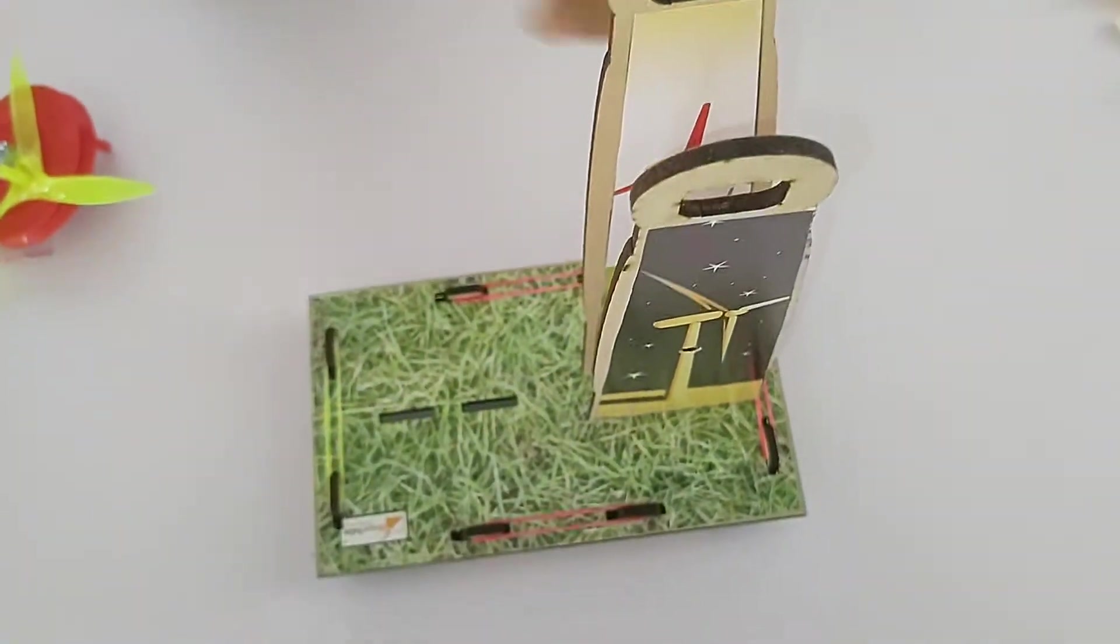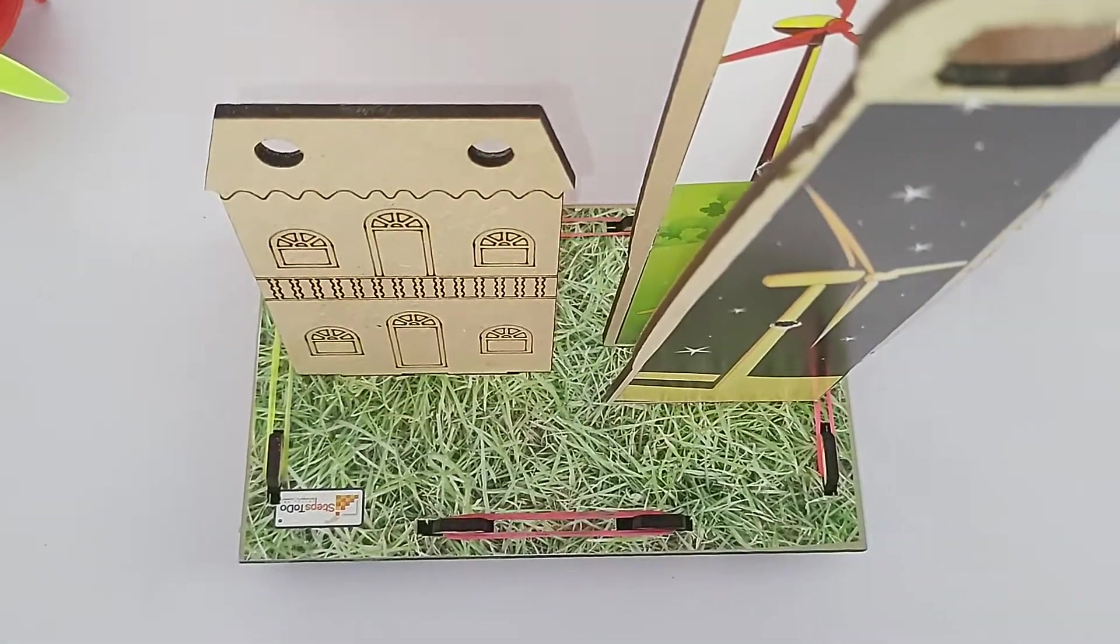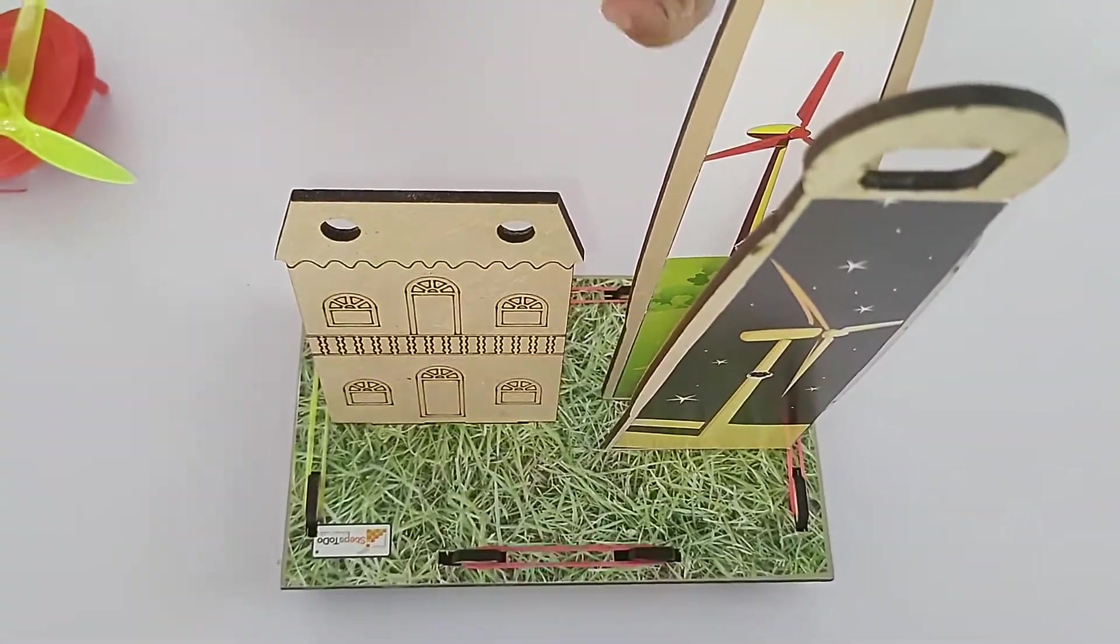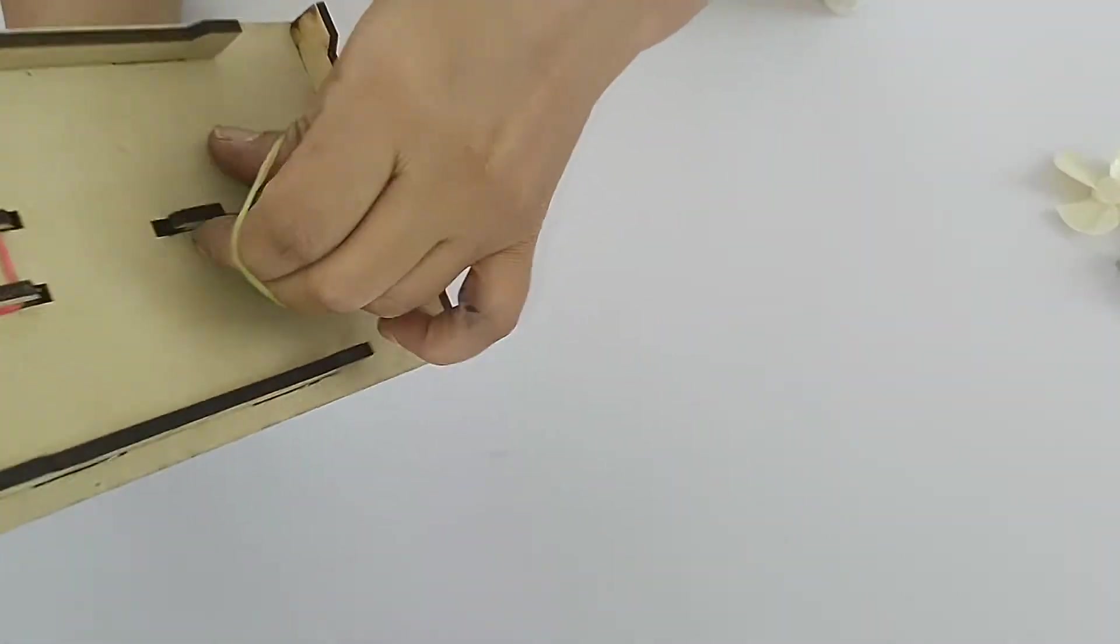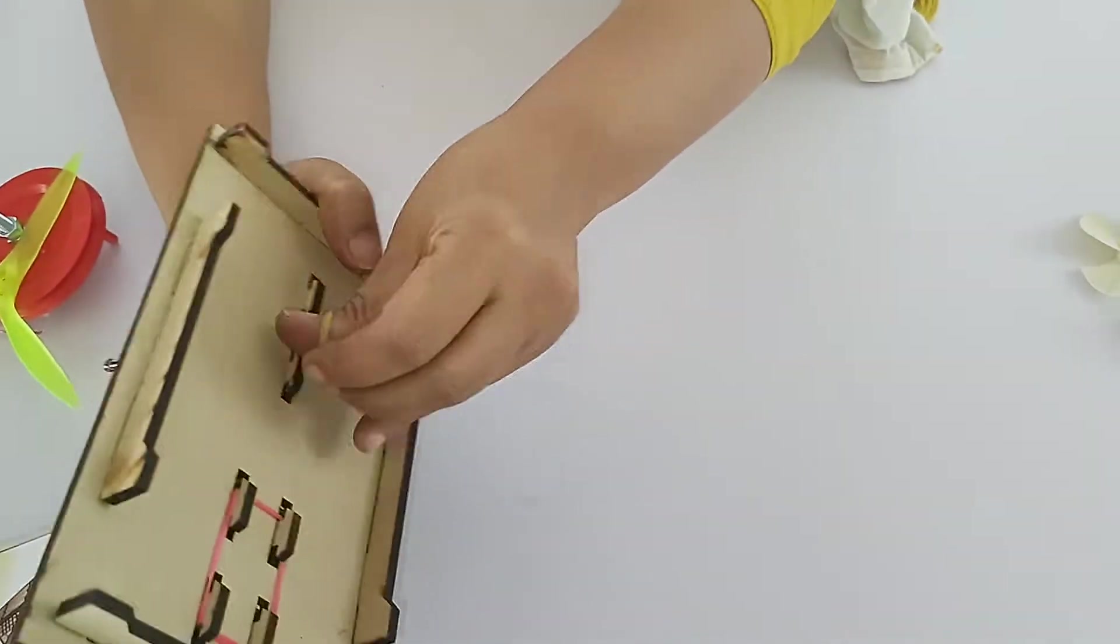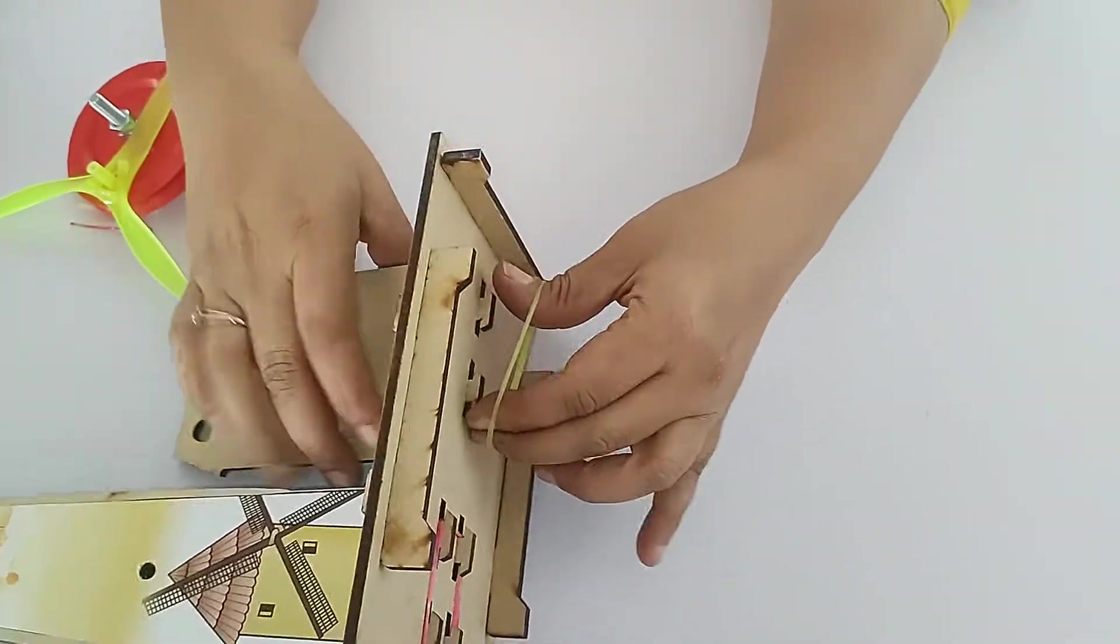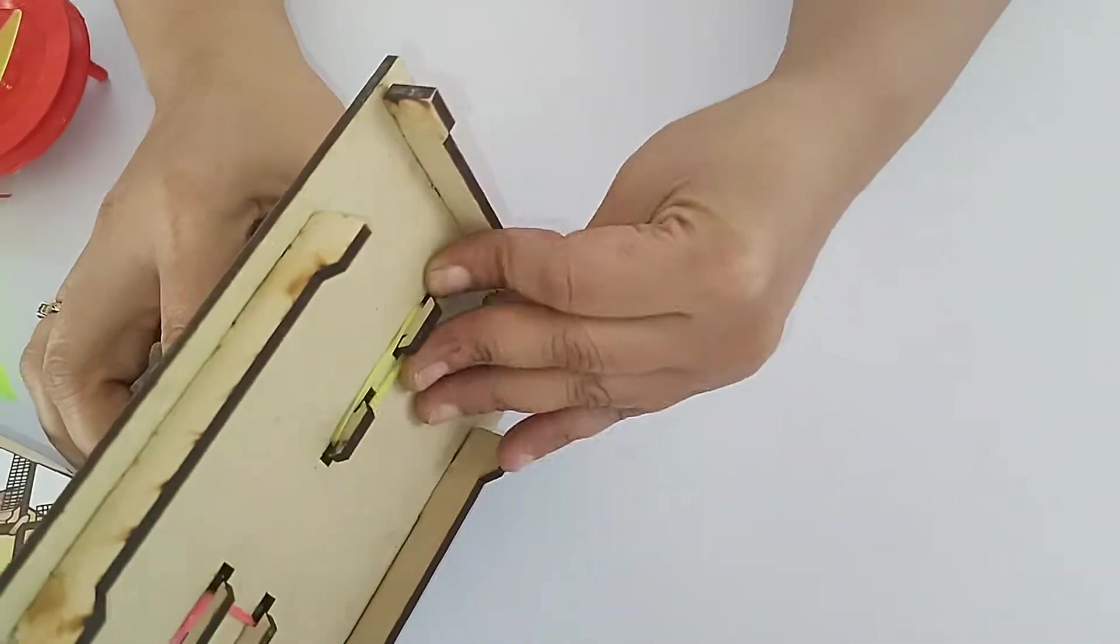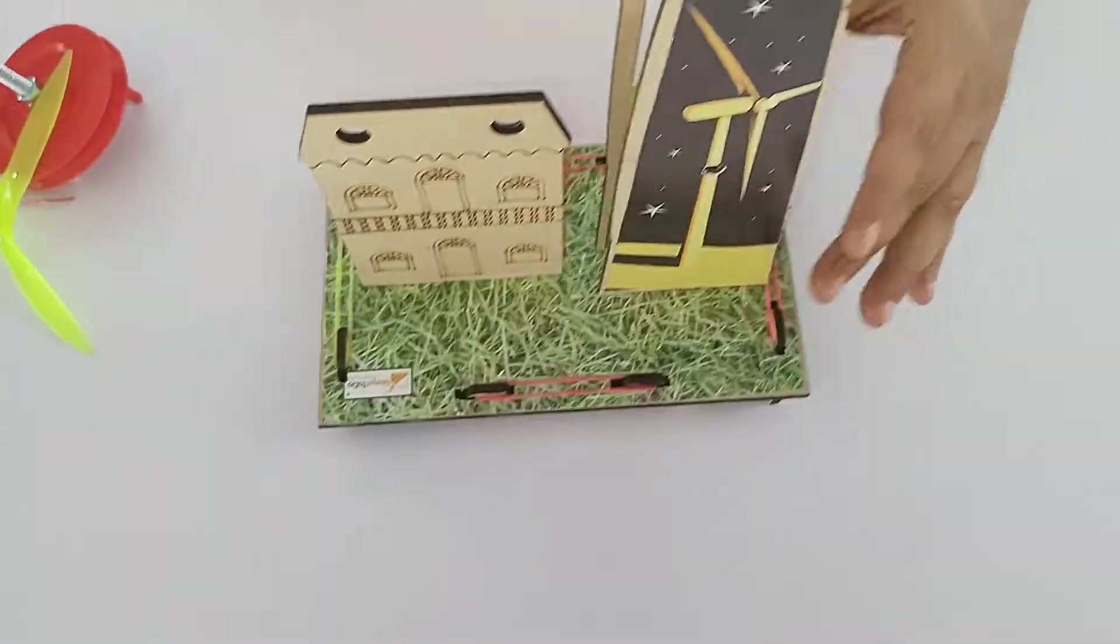Same way, insert the house into the other slot. Now again, you are supposed to twist the rubber band, make it double and fix the house from the base side like this. Hold it. I will just show it to you. Fine, it's done.